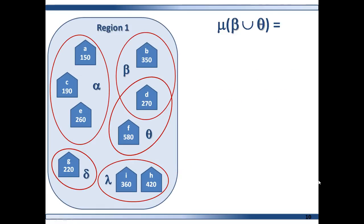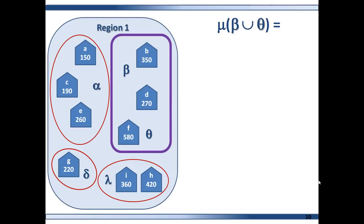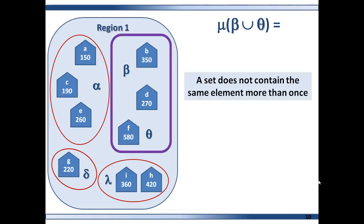The second useful property concerns the measure of the union of sets Beta and Theta. Notice that sets Beta and Theta do overlap — they are not disjoint, so we cannot use the rule from before. The union of sets Beta and Theta just contains hospitals B, D, and F. A set does not have the same element in it more than once, so in this case the union is not the sum — otherwise you would count Hospital D twice.